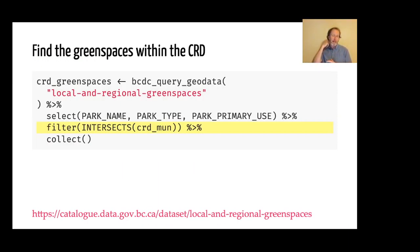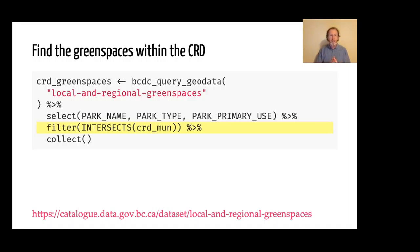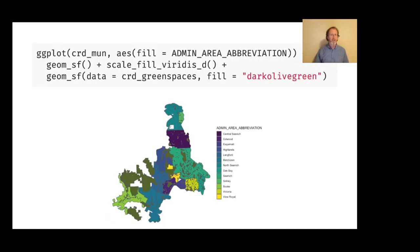There's a record of local and regional green spaces. We put that ID into our bcdc_query_geodata function, pipe that into select to get the columns we want — park name, park type, and primary use — and then pipe that again into filter. This is the great part: instead of using a logical predicate, we're using a geometric predicate. We're saying give me those green spaces that intersect the CRD municipalities object. That CRD municipalities SF object goes along with the query. We run collect, it sends the whole shebang to the server, does the processing, finds the green spaces that intersect with that object, and downloads only those. We can then plot those on top of our CRD municipalities and see just those dark green parks that intersect the regional district I live in.